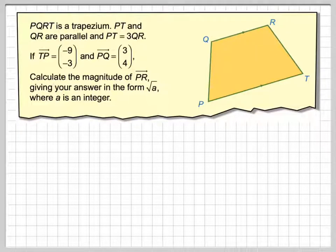It says if vector TP is (-9, 3) and PQ is (3, 4), calculate the magnitude of PR, giving your answer in the form root of a, where a is an integer.